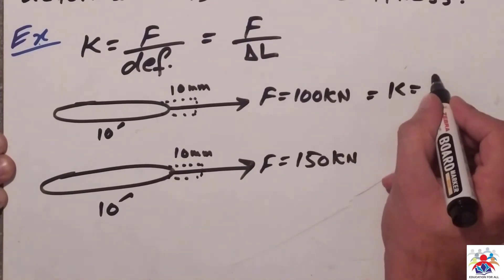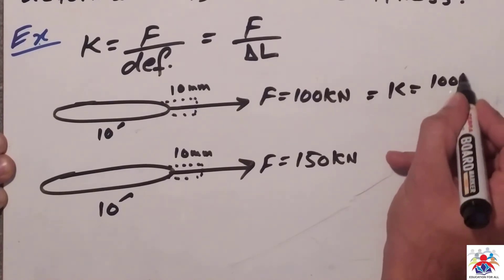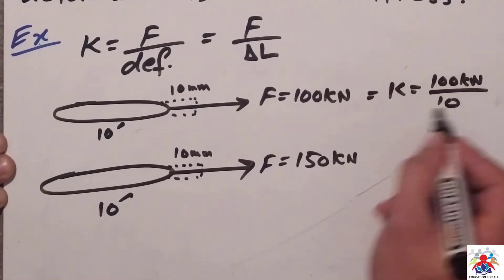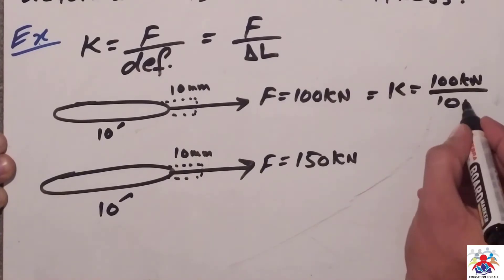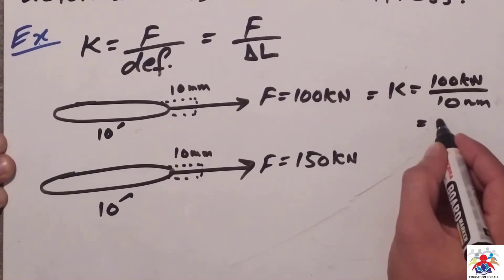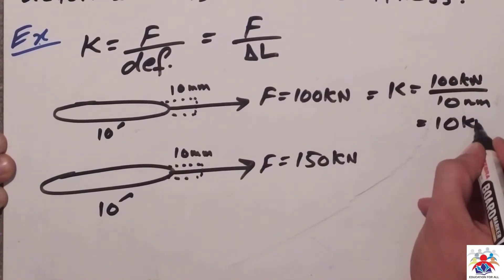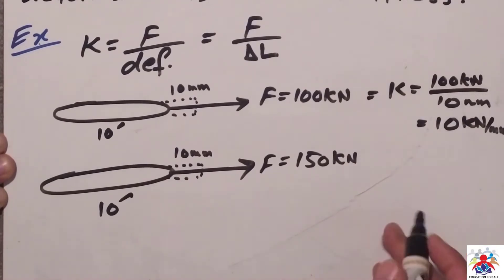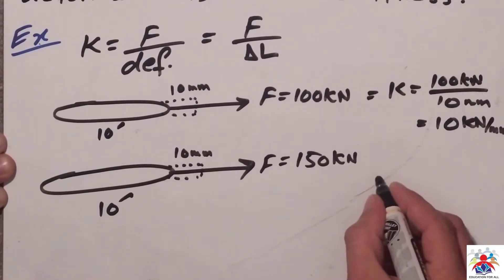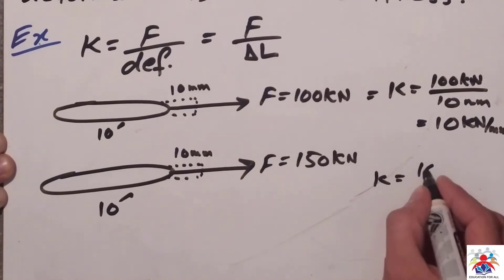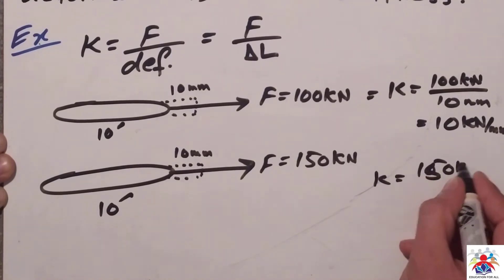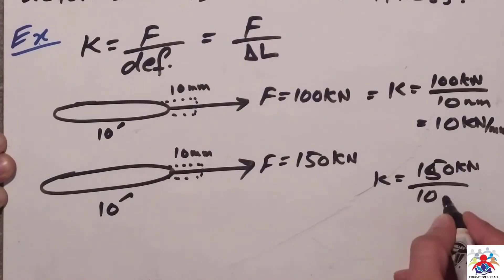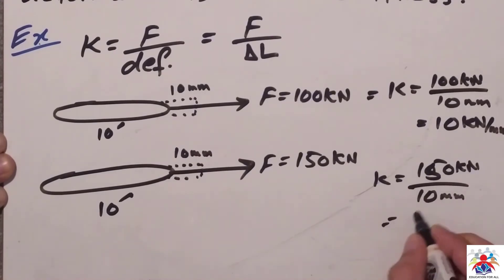For the first rod, k is equal to 100 kilonewtons divided by 10 millimeters, which gives 10 kilonewtons per millimeter. For the second rod, k is equal to 150 kilonewtons divided by 10 millimeters, which gives 15 kilonewtons per millimeter.